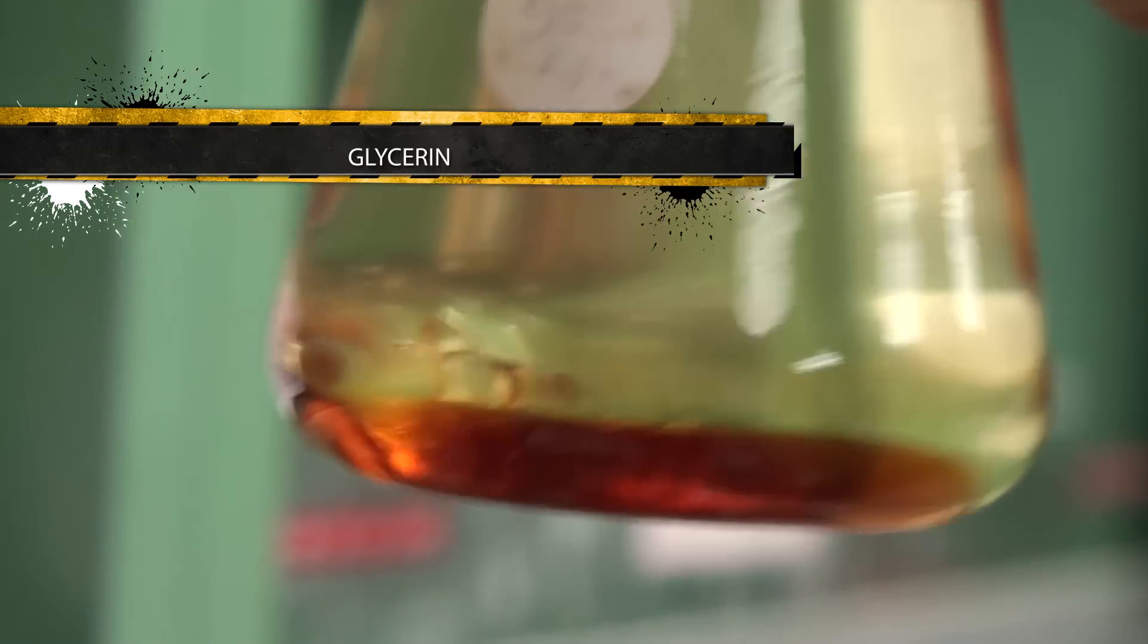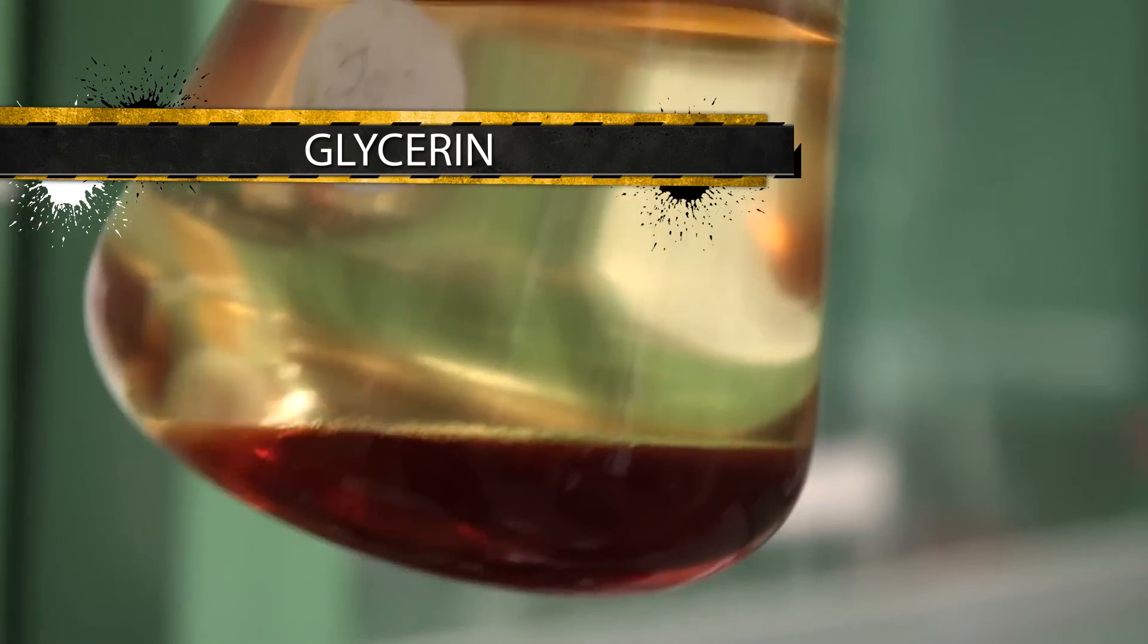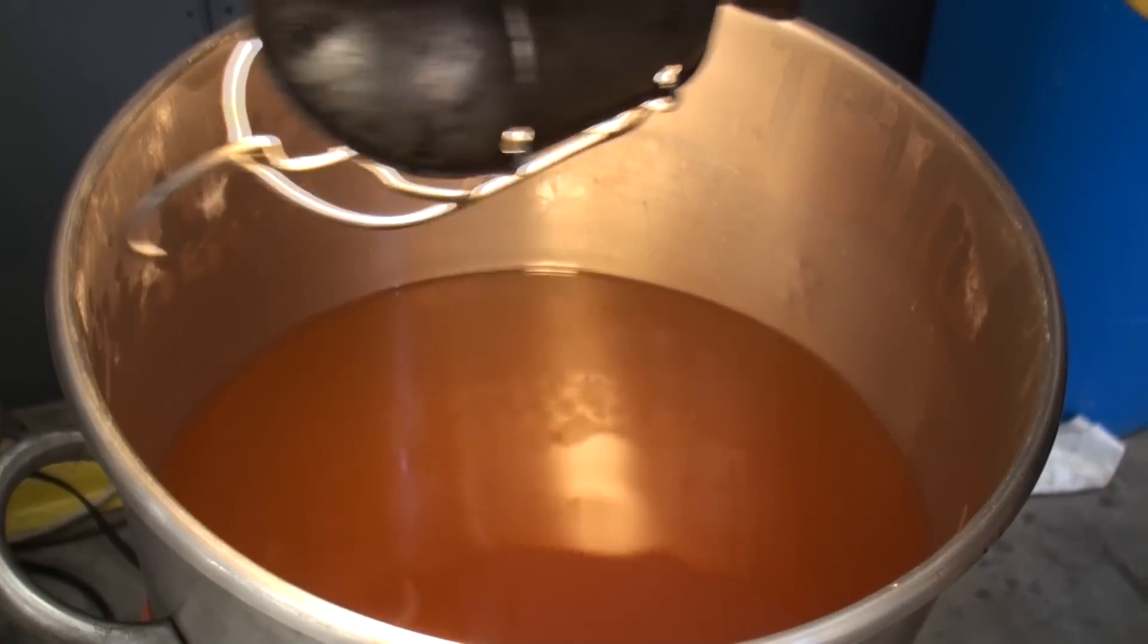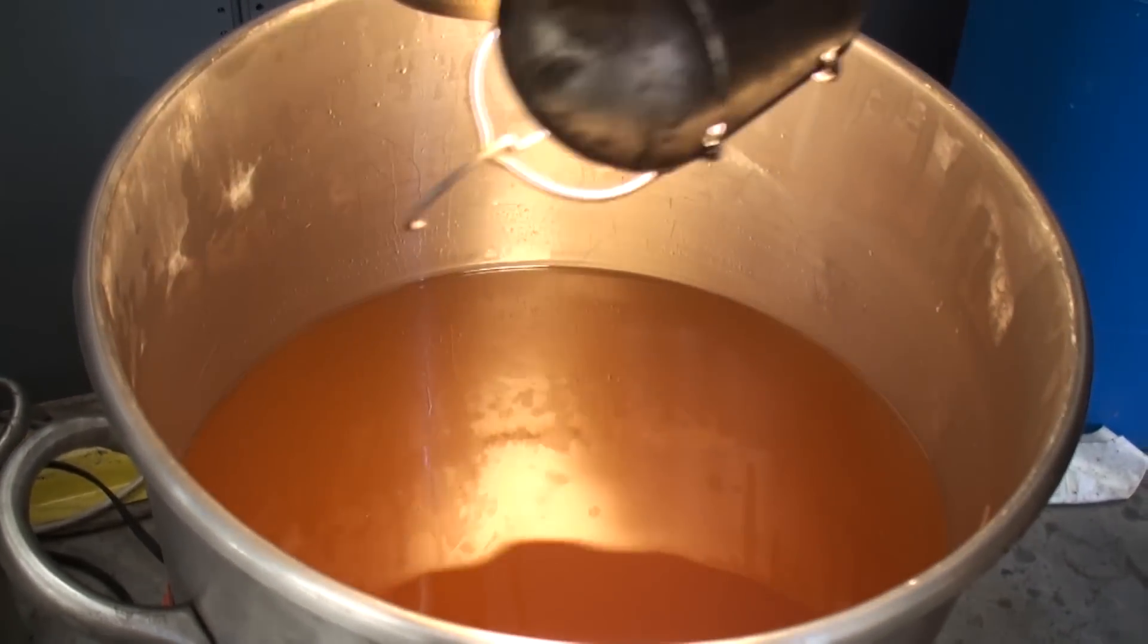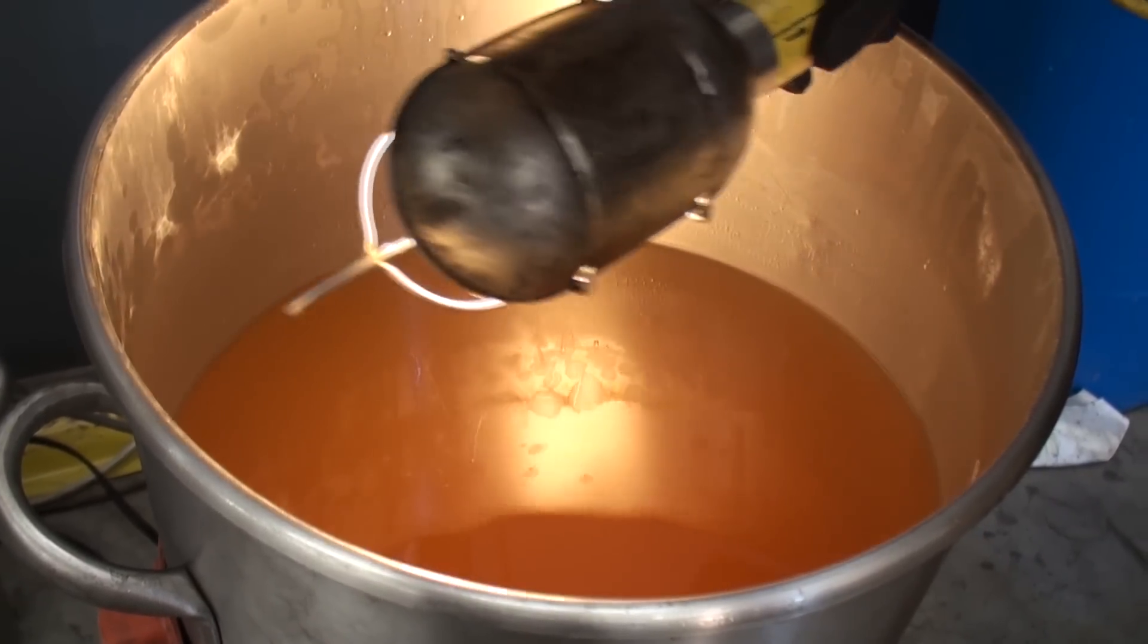The co-product, glycerin, has a lot of other uses like making soap, but that's another topic. Our method of making biodiesel is a two-reaction process, meaning we perform these steps twice.